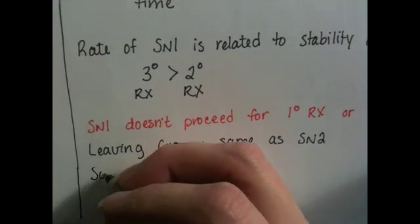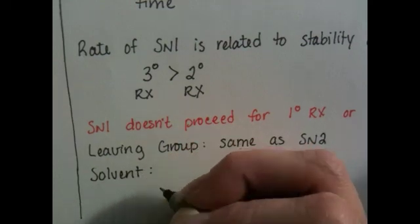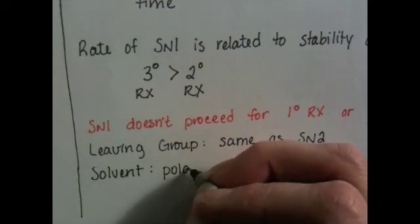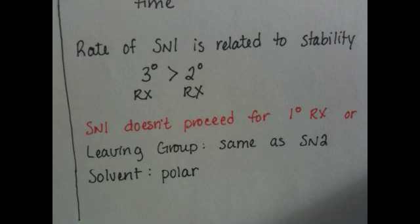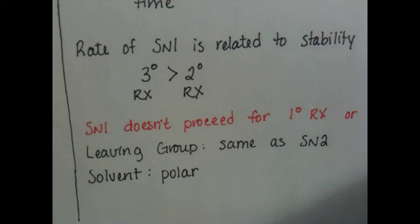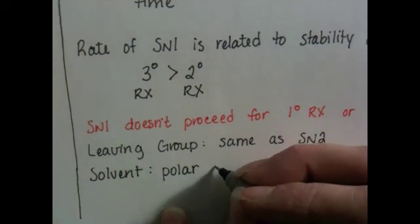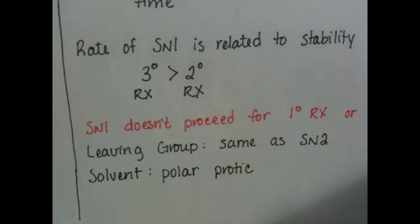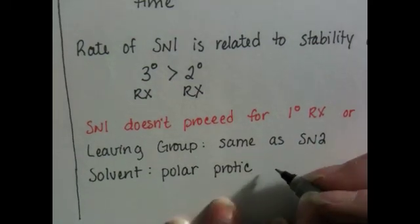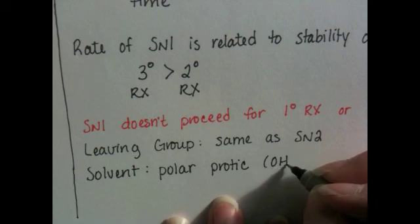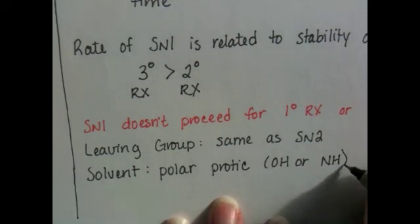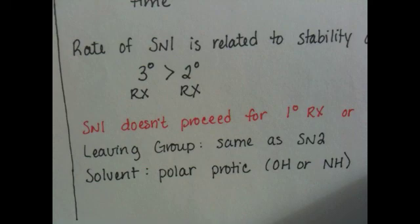The solvent for SN1 has to be polar, just like with the SN2 reaction, because you're dealing with ionic species — specifically the formation of a carbocation, which is a polar substance. It also needs to be protic, unlike the SN2 solvent. A protic solvent is something that has an OH or NH bond in it, and protic solvents help to stabilize the carbocation intermediate formed in the SN1 reaction.